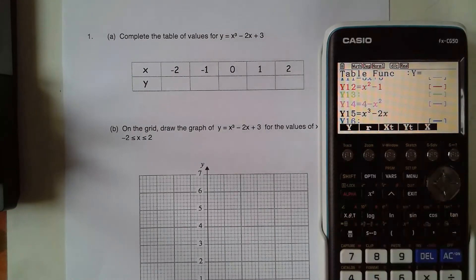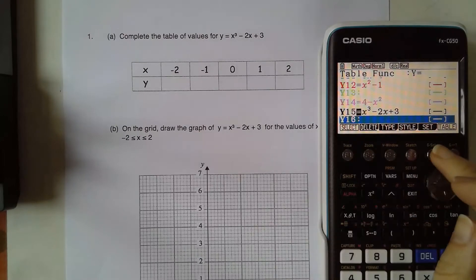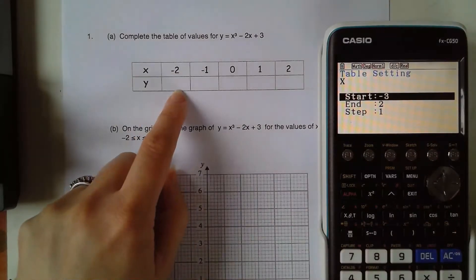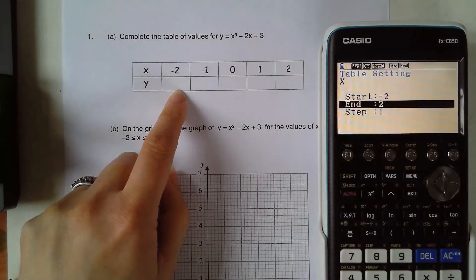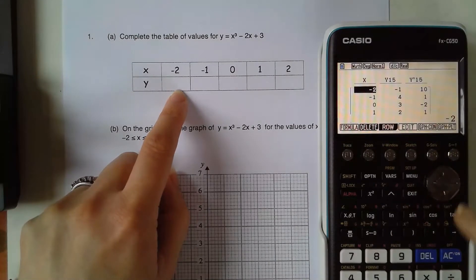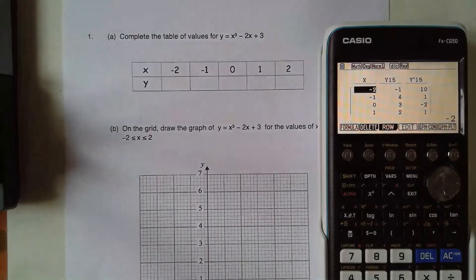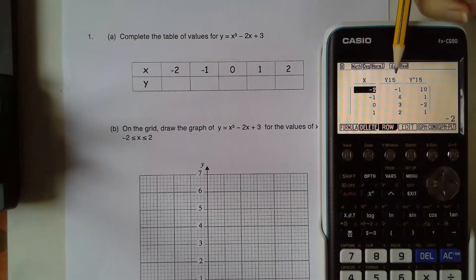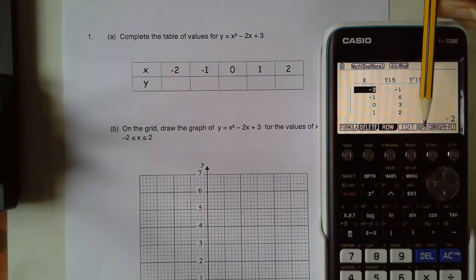Now come out of that down to the main calculator in line again, subtract 2x plus 3. There we go. I'm going to set my table this time at negative 2 finishing it 2, exit, do my table. Remember these are my x values, these are my y values, and this is my gradient at each of those points.